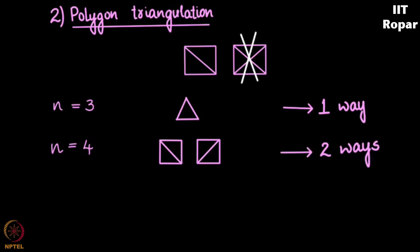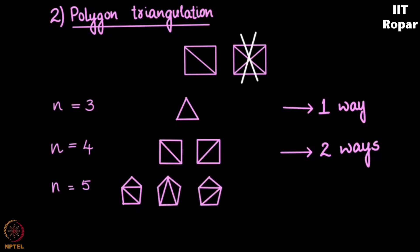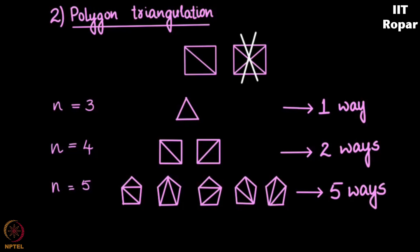When n is equal to 5, I have a five-sided polygon. How can I triangulate this? There is this way, this way, this way, this way, and this last one — I have exhausted all the possibilities. So we have five ways of triangulating a five-sided polygon. For n equal to 6, it can be done in 14 ways.